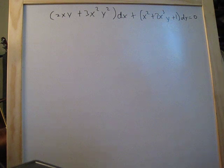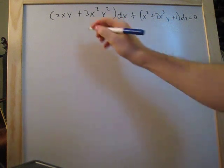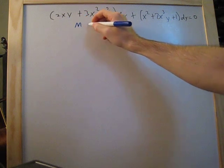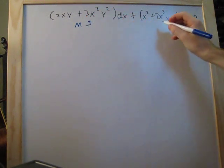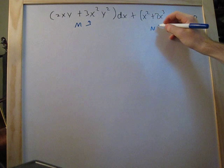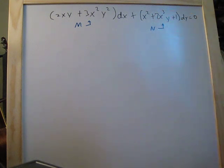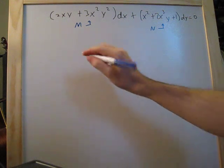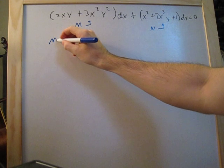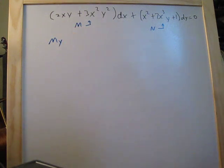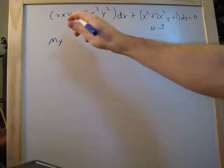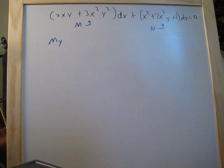The first thing we have to do is call the left side M and the right side N. So the first thing we're going to do is differentiate M with respect to y — that means we take the derivative of the left side with respect to y.